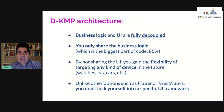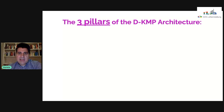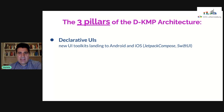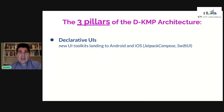Let's look at the three pillars of this DKMP architecture. First, declarative UIs — we now have a declarative UI in Android called Jetpack Compose, which is going to become 1.0 by the end of this year. In iOS, since about one and a half years ago, we also have SwiftUI, which has replaced the traditional UIKit.